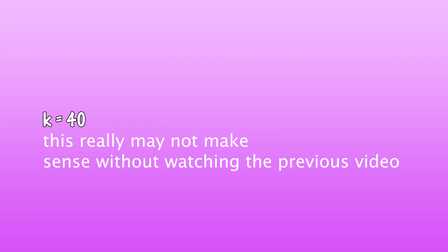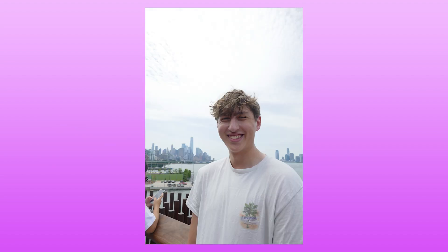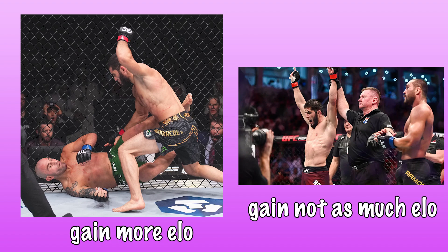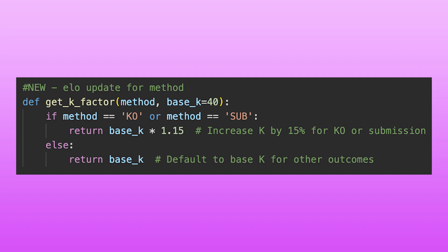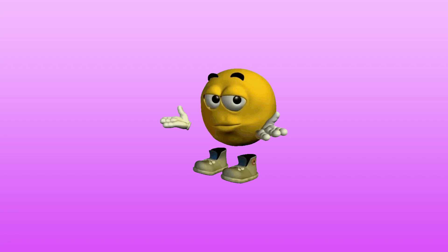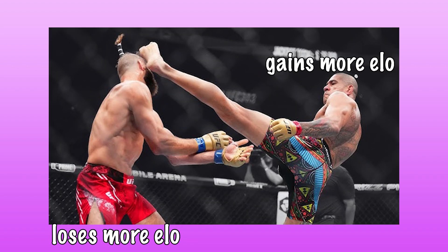Do you guys remember the K-value from the last video — how we set it to 40? The next popular suggestion was: what if we give more ELO for finishes? If a fighter gets a submission or knockout, they should get more ELO than a decision. I went ahead and did it — if a fighter gets a finish, regardless of the round, the K-value gets a 15-point boost. Fighters who finish gain more, and fighters who lose by finish lose more, adjusted for peak ELO.